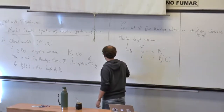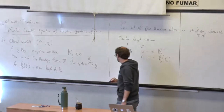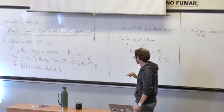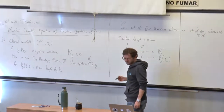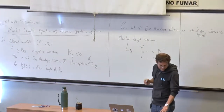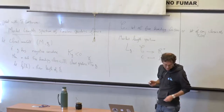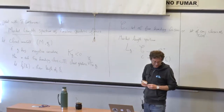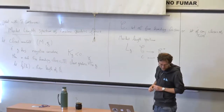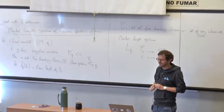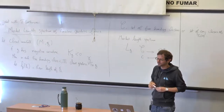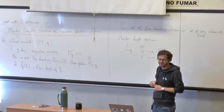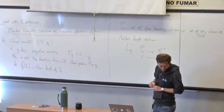So what is the Marked Length Spectrum? It will be a map that I call L(g) — big L — which goes from C to ℝ₊, and which to c associates the length of the closed geodesic in the free homotopy class. There is a folklore conjecture — I think it appears in the paper of Keith Burns and Katok in 1985.